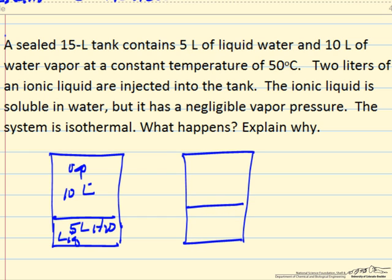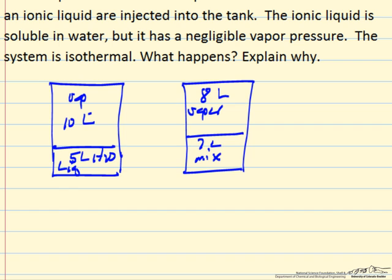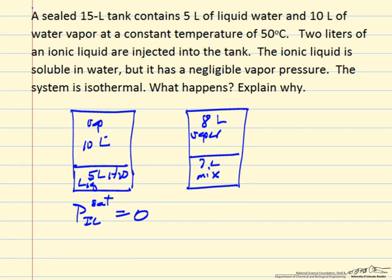We end up with 7 liters of the mixture, and since it's a fixed volume, we have 8 liters of vapor, and the question is what's in the vapor. Since the saturation pressure of the ionic liquid is zero, the vapor is all water vapor.